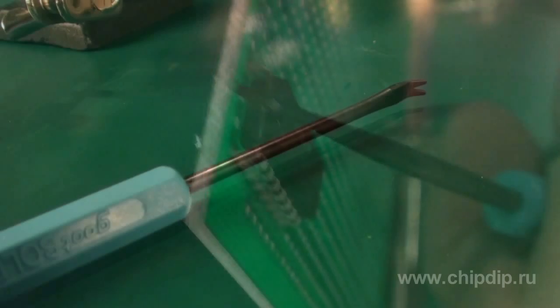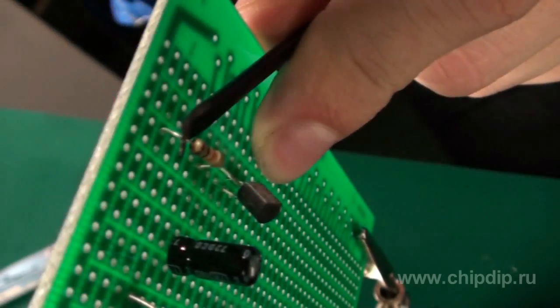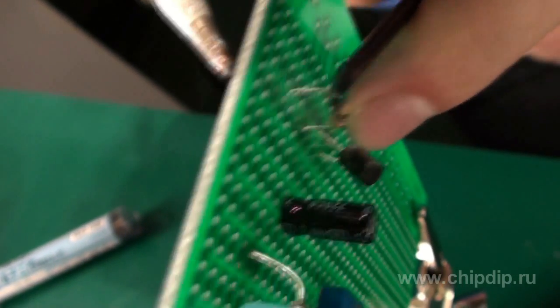The fork is used to remove radio elements from the board. The outputs of these elements are pulled out when heated with the soldering iron.